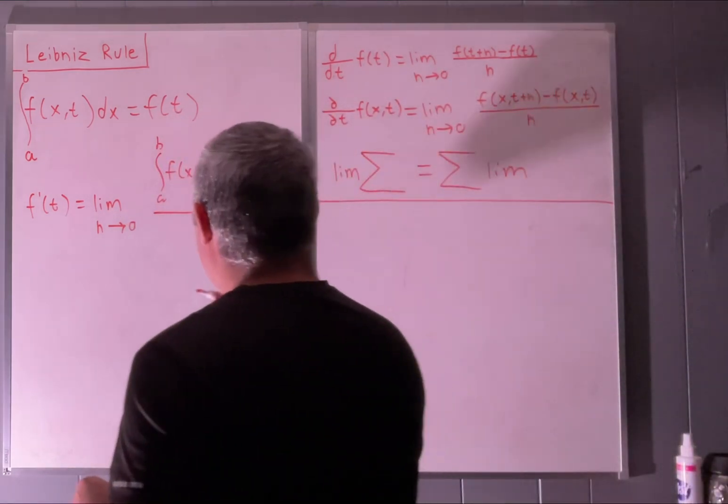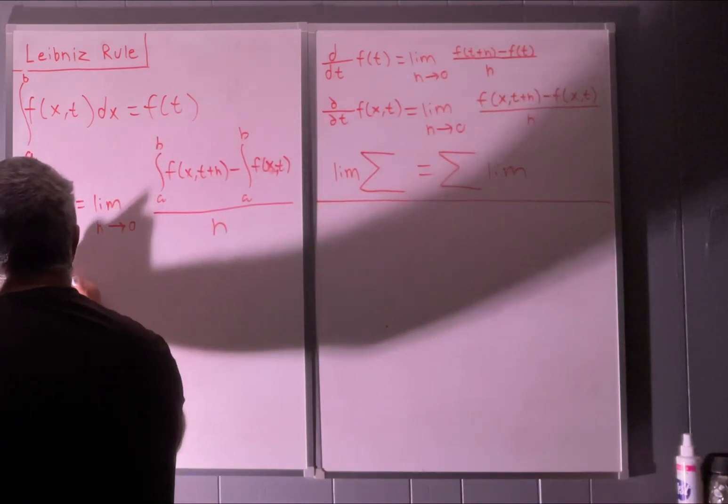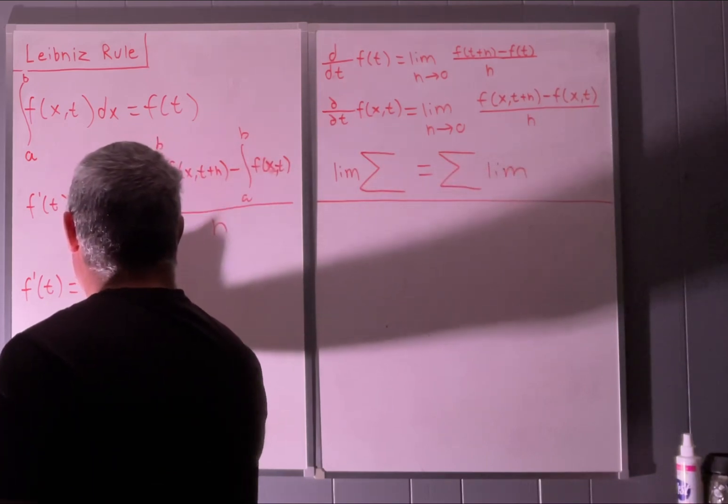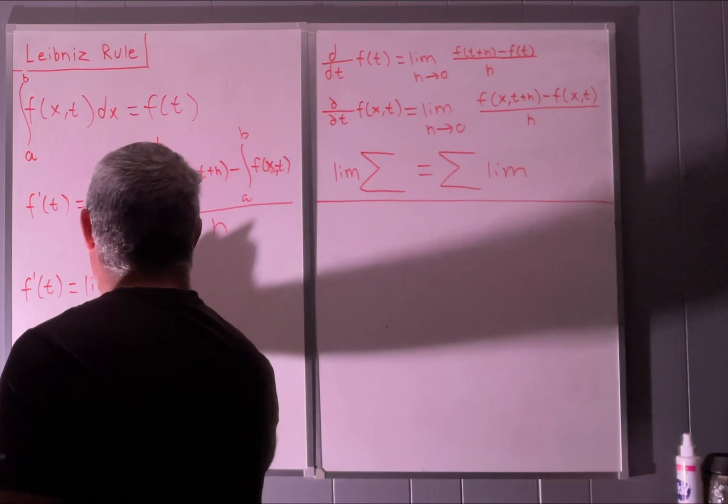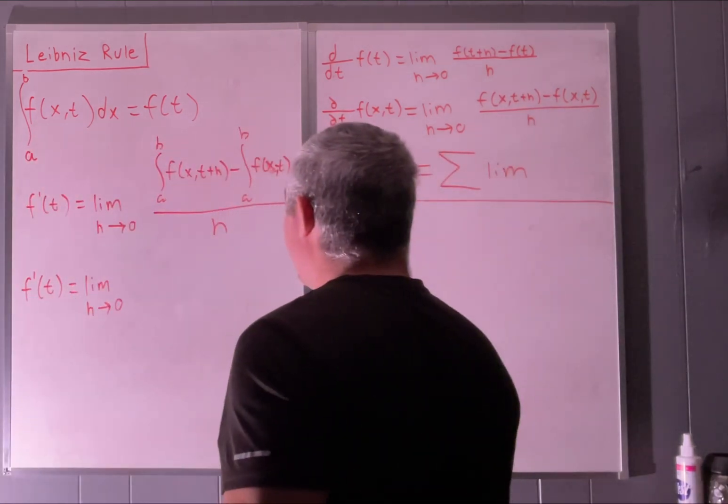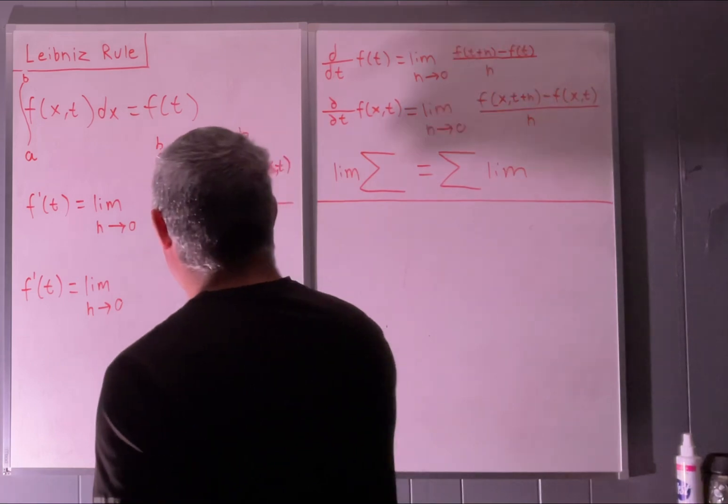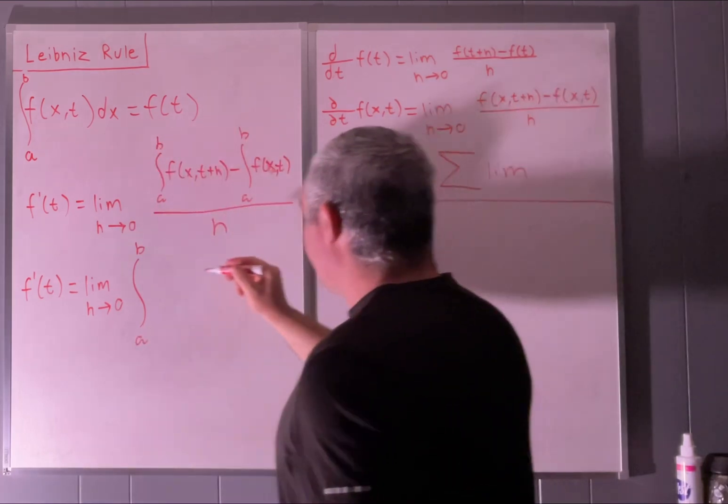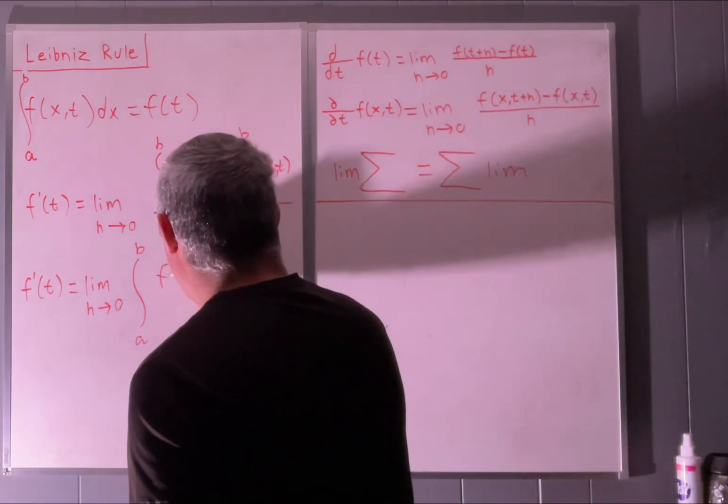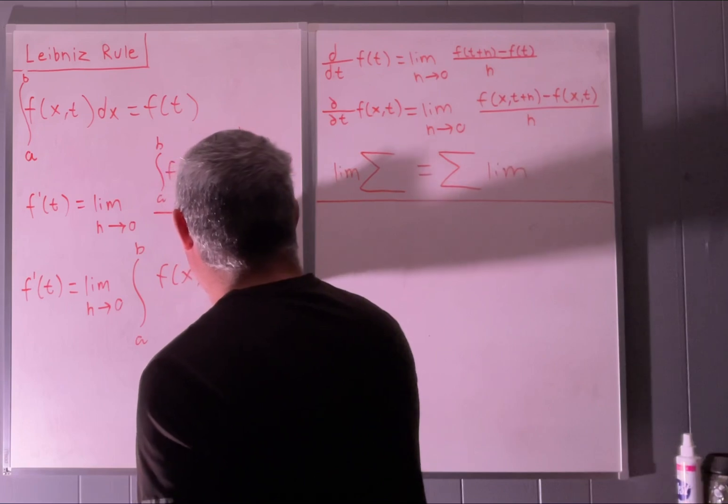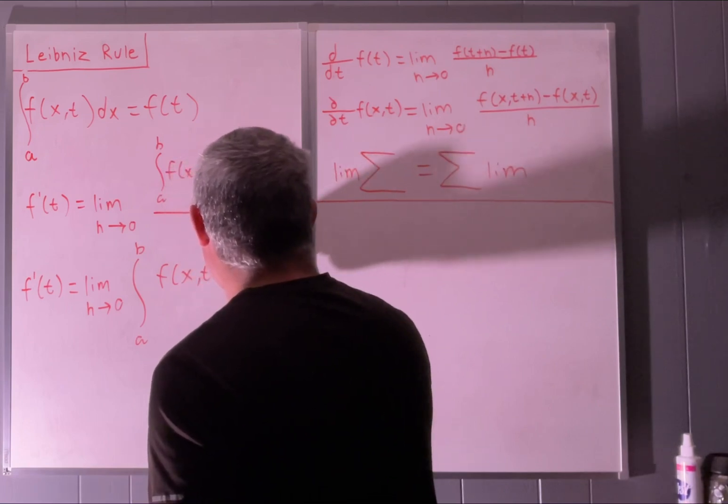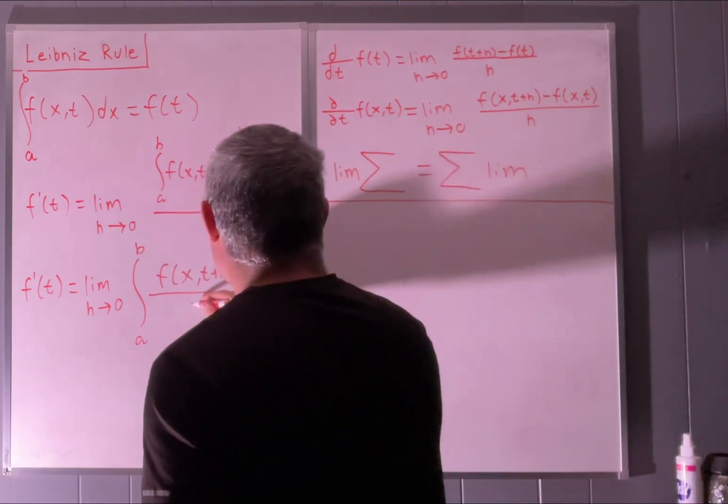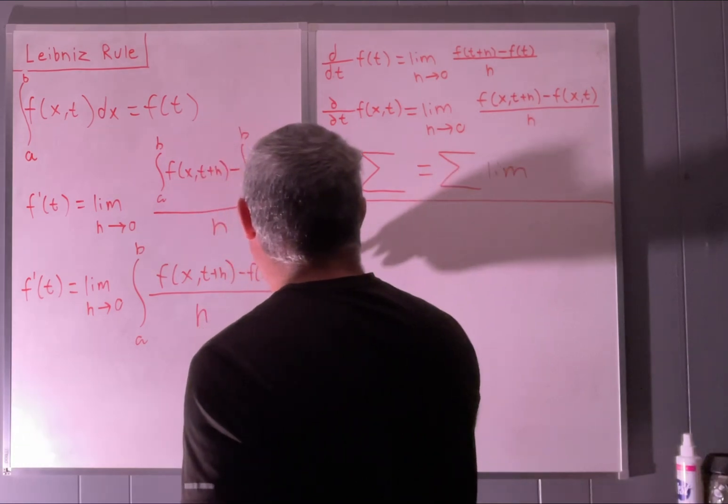So I'll just write it. Our new f prime of t is going to be equal to the limit as h approaches 0 of, we're going to have the integral from a to b of f of x comma t plus h minus f of x and t all over h, and I'll put the dx in that time.